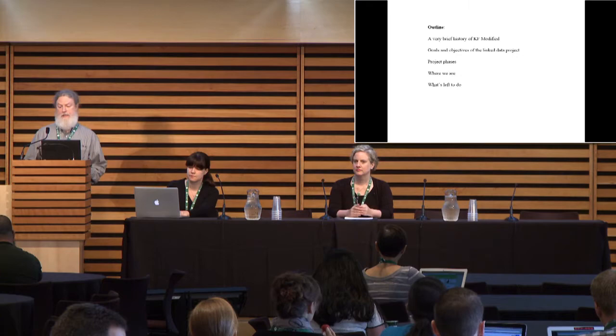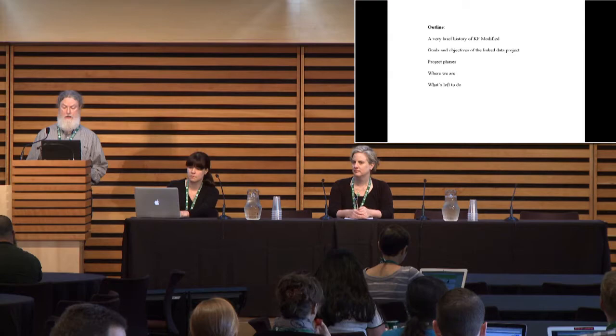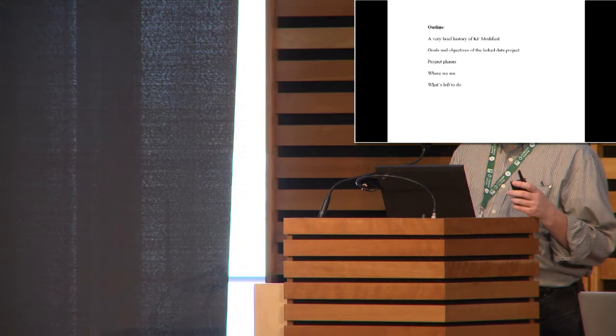I'll begin with a very brief history of the KF Modified classification scheme, where it came from and why it's still a popular choice for Canadian law libraries. Then I'll run through the goals and objectives of the project, the various project phases, and what we've been able to accomplish so far. And I'll end with what we still need to do in order to complete this project.